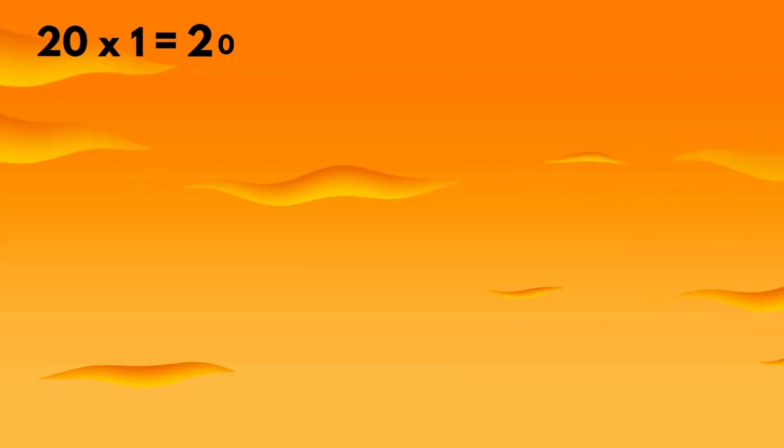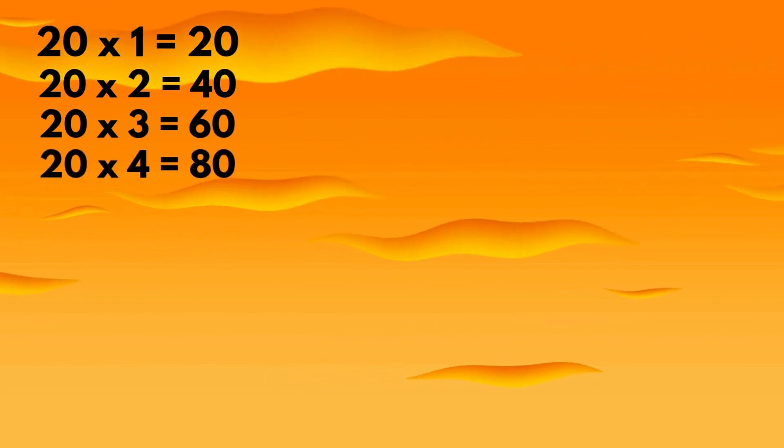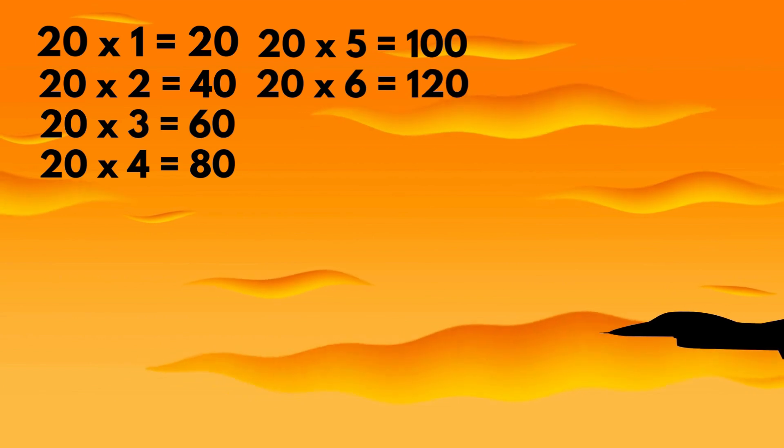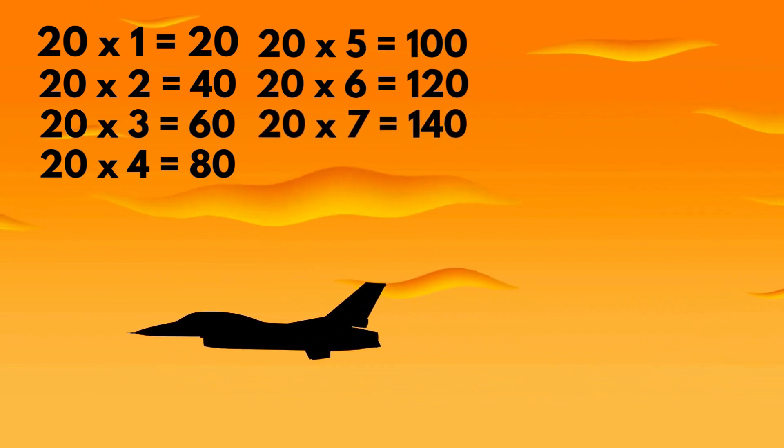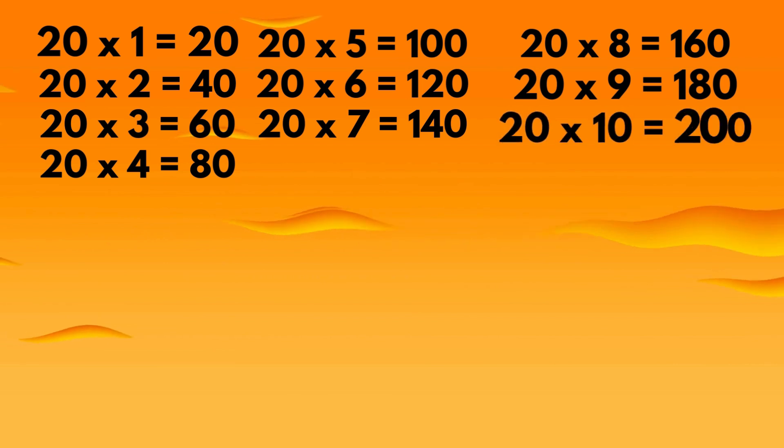Table of 20. 20 1's are 20, 20 2's are 40, 20 3's are 60, 20 4's are 80, 20 5's are 100, 20 6's are 120, 20 7's are 140, 20 8's are 160, 20 9's are 180, 20 10's are 200.